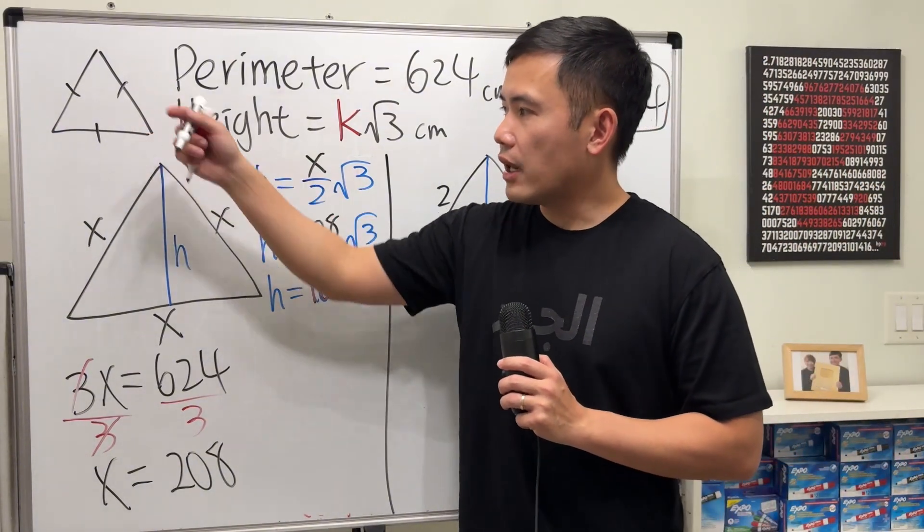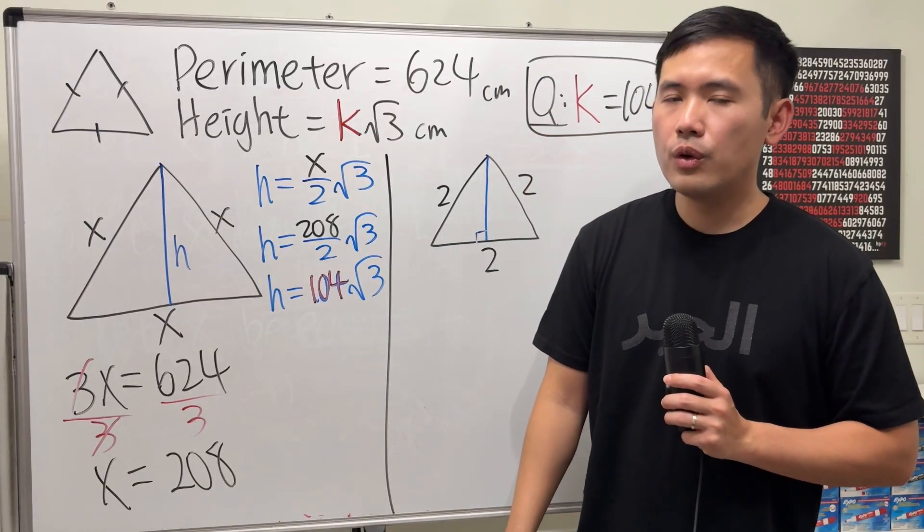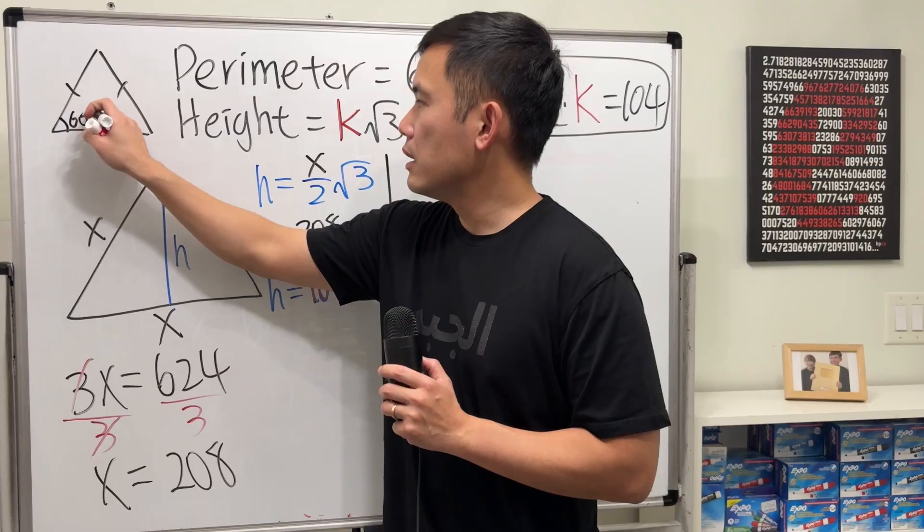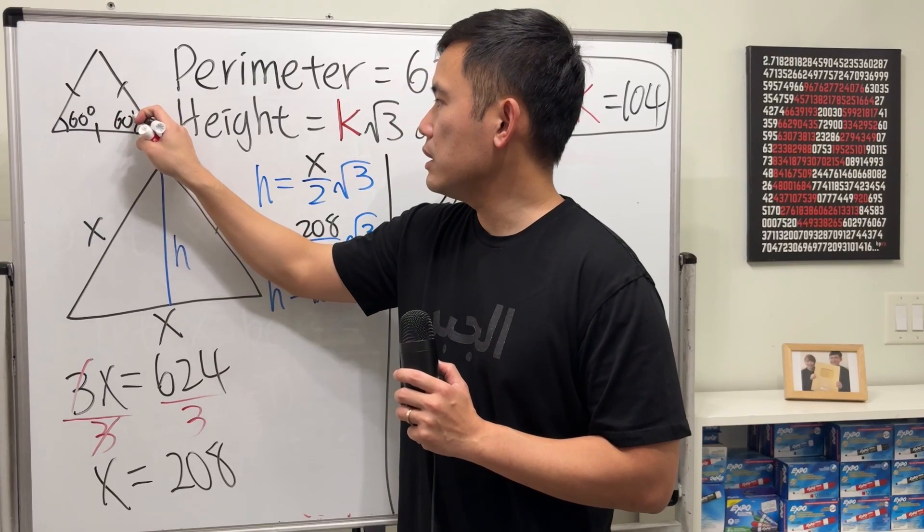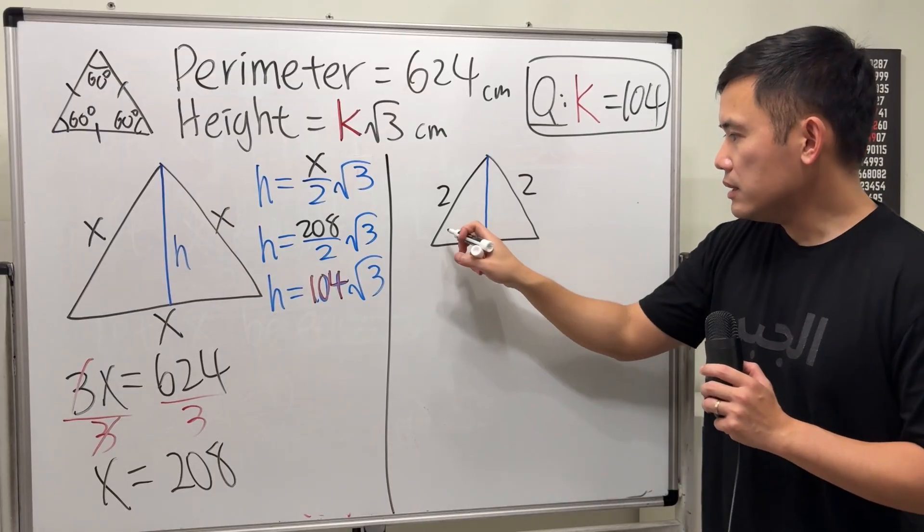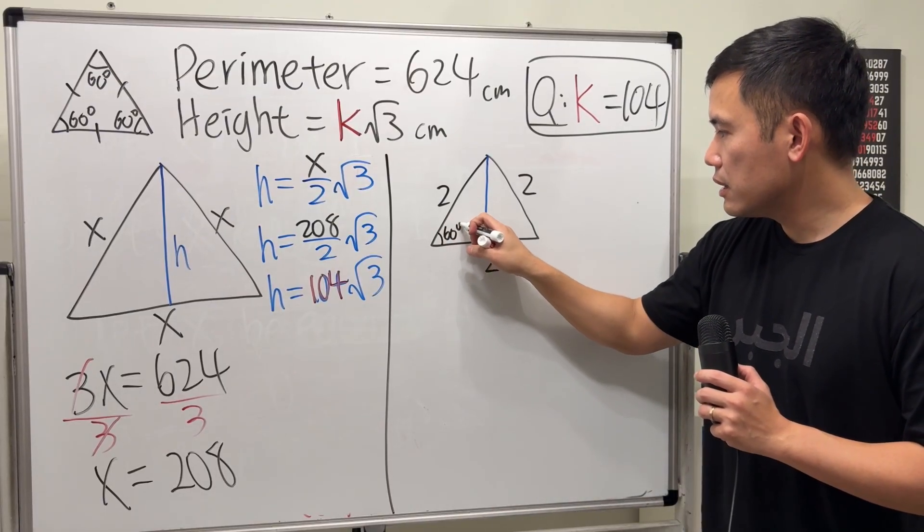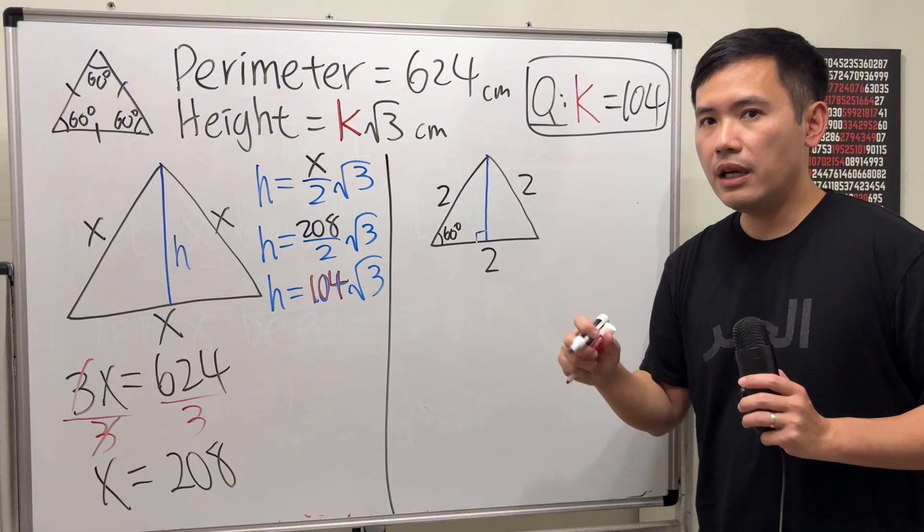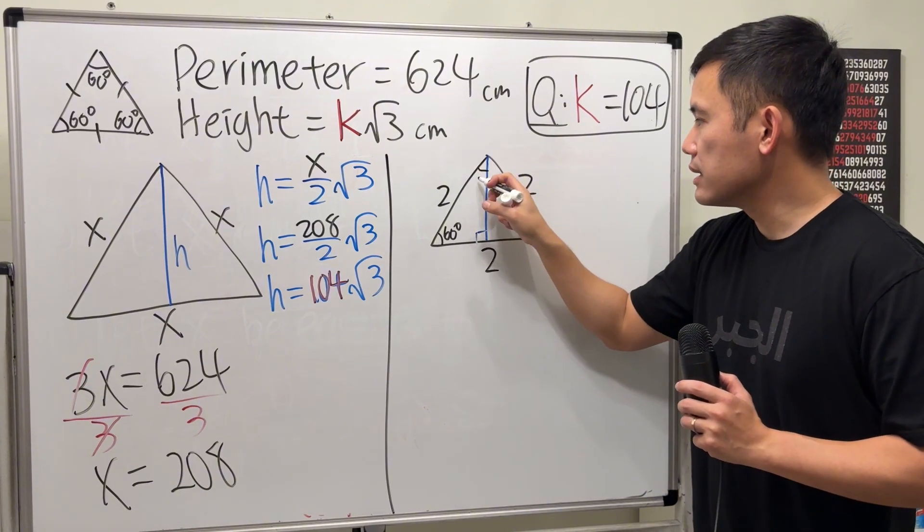And besides all the sides are equal, for an equilateral triangle, we also know that all the angles are equal and each one is 60 degrees. Because they have to add up to 180. So that means this right here is 60, that's 90. This and that add up to 60, and they are equal, so this right here is 30.